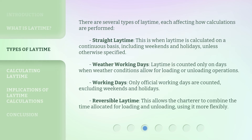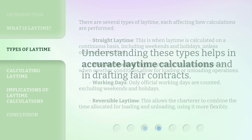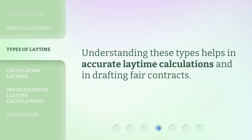There are several types of laytime, each affecting how calculations are performed. Straight laytime: this is when laytime is calculated on a continuous basis, including weekends and holidays, unless otherwise specified. Weather working days: laytime is counted only on days when weather conditions allow for loading or unloading operations. Working days: only official working days are counted, excluding weekends and holidays. Reversible laytime: this allows the charterer to combine the time allocated for loading and unloading, using it more flexibly. Understanding these types helps in accurate laytime calculations and in drafting fair contracts.